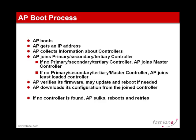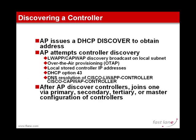So that's the process. Now the question is: how does the access point gather information about controllers? It has several ways: sending a broadcast to its local domain, sending a discovery message to a unicast IP address of a known controller, receiving information from a DHCP or DNS server, or using over-the-air provisioning. All of this is the topic of the next video. Thank you.